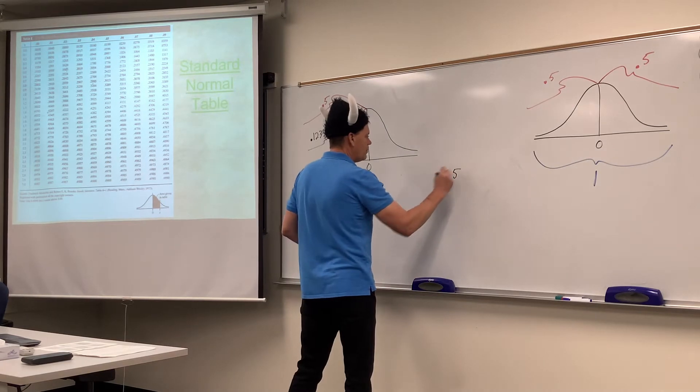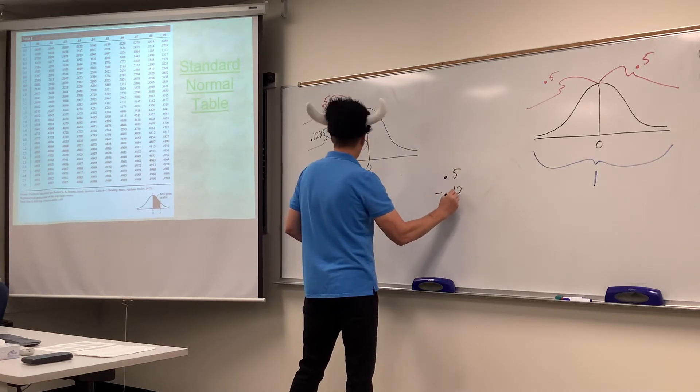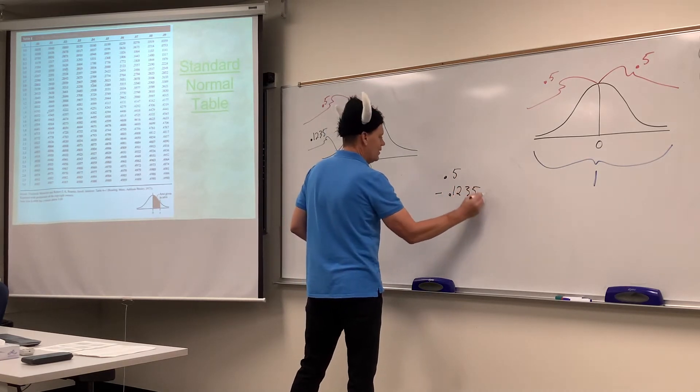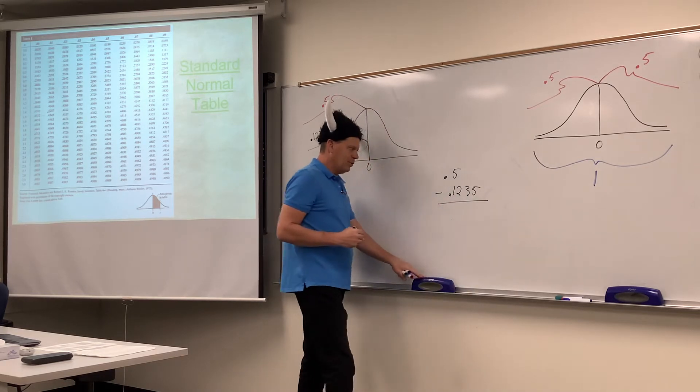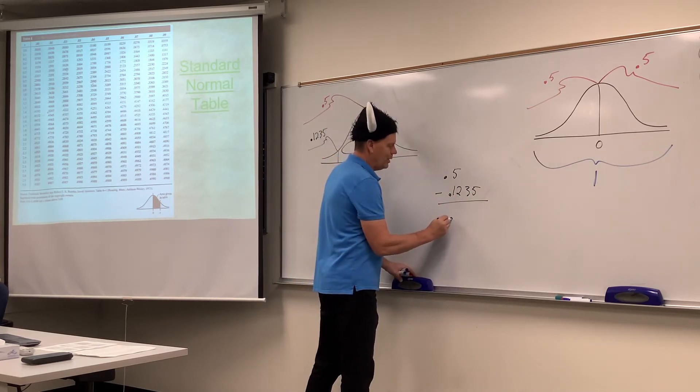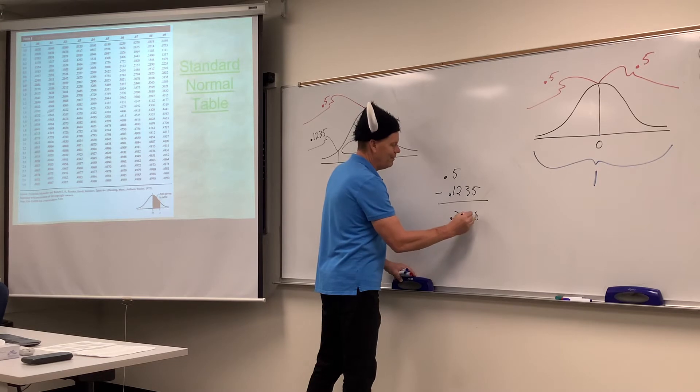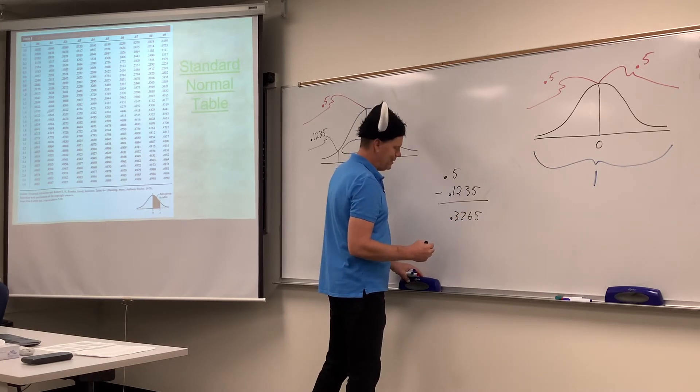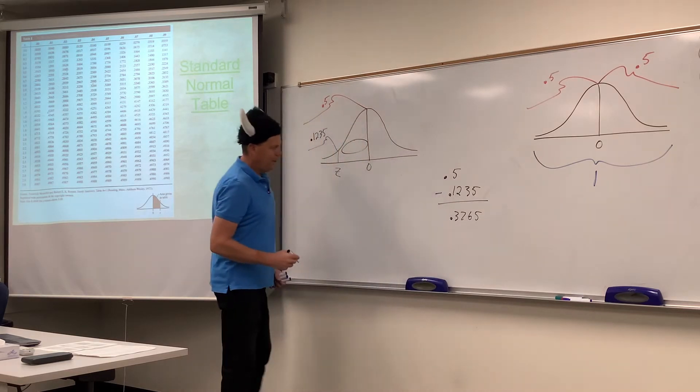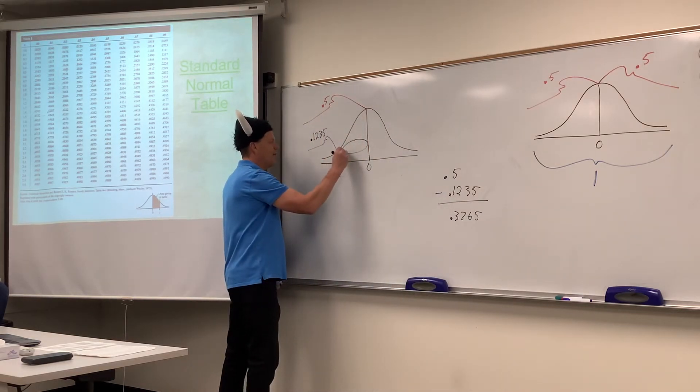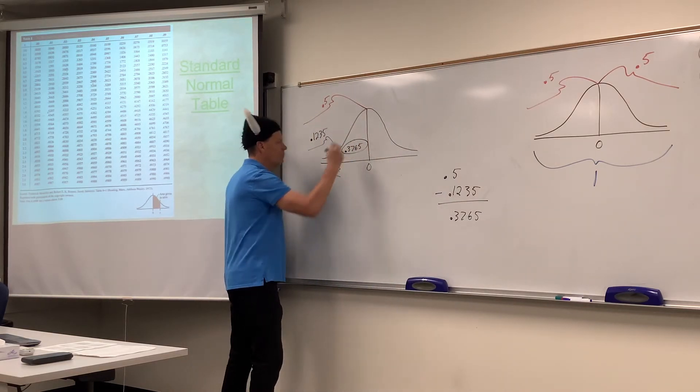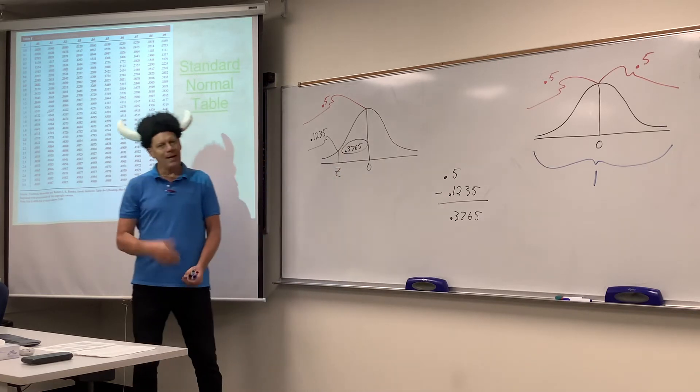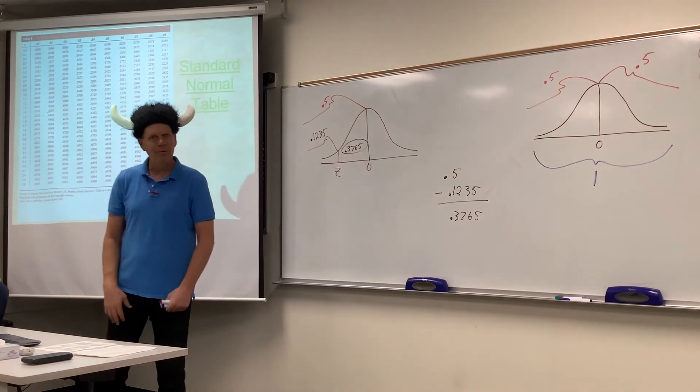And just remember, once we figure out what this middle sliver is, then we're going to be able to go to the table. What is that? 0.3765? I hope that's right. I think so. It's embarrassing if it's not. So 0.3765 is middle sliver. Hey table, I got a middle sliver for you. Does that make the table happy?